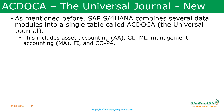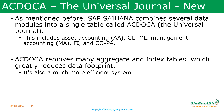SAP S4HANA combines several data modules into a single table called the universal journal, i.e., ACDOCA. This includes asset accounting, GL, material ledger, management accounting, FI, and COPA. ACDOCA removes many aggregate and index tables, which greatly reduces the data footprint, making it a much more efficient system.